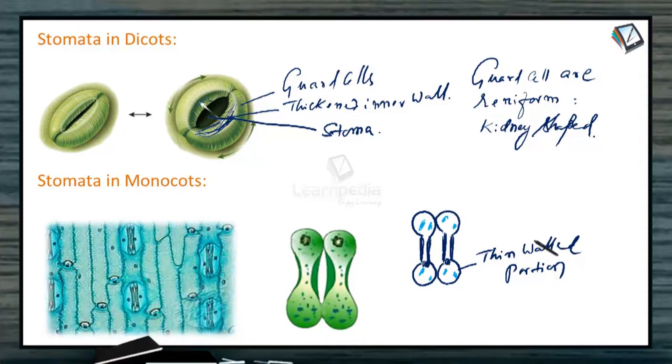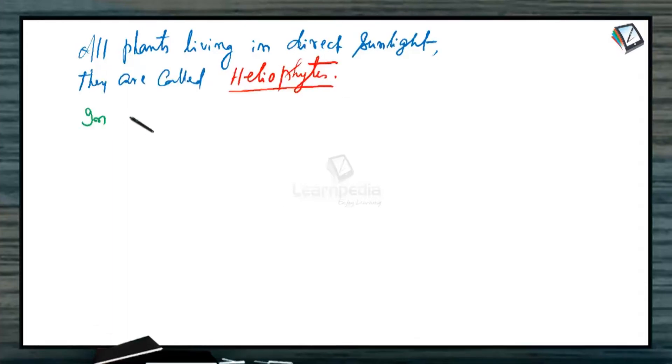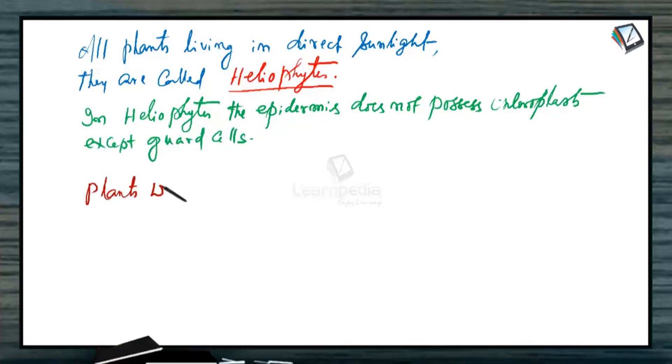Here is a concept that you should remember. All plants living in direct sunlight, they are called heliophytes. In heliophytes, the epidermis does not possess chloroplasts except guard cells. Plants which live in shade, they are called sciophytes.